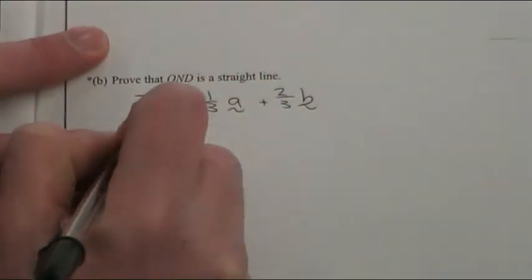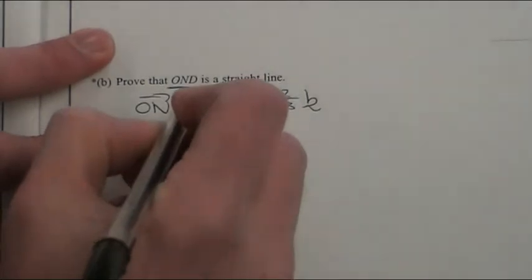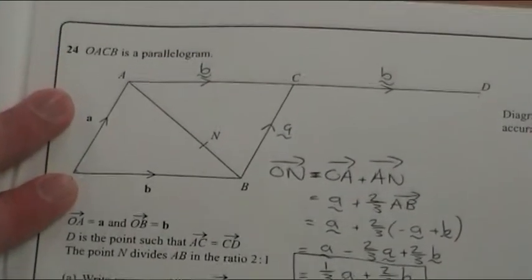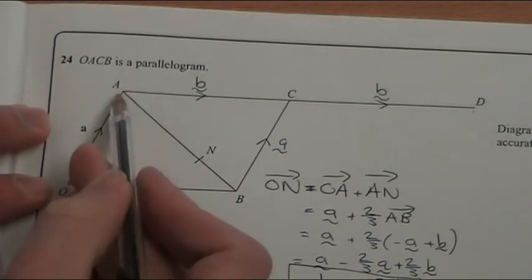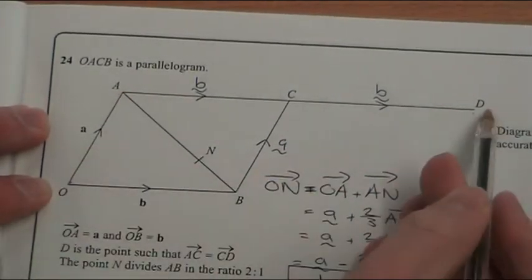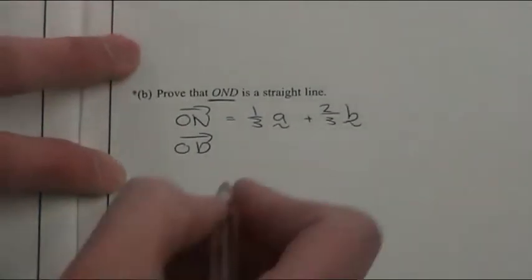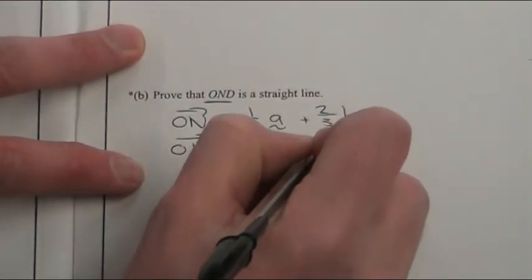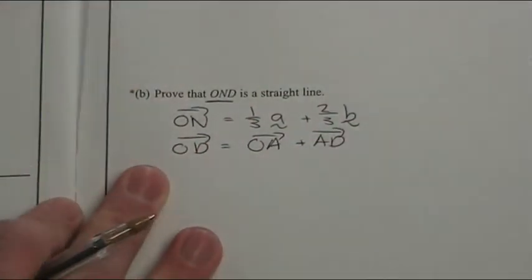And what we're going to have to do is work out OD. Now to get from O to D I'm going to go from O to A and then A to D. I'll write that down here so it's OA plus AD. Let's go back up to the picture.